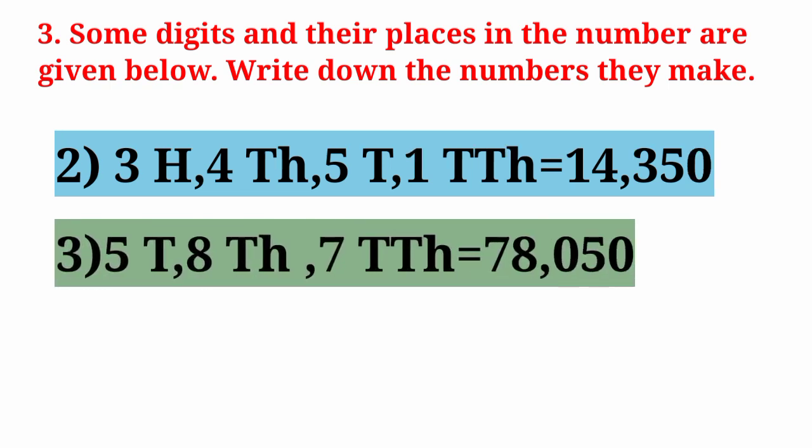Next digits: 5 tens, 8 thousands, 7 units, and 7 ten thousands. Number will be 78,057.